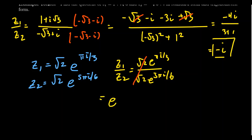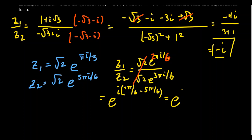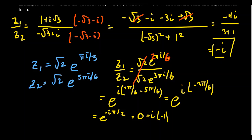Converting π/3 to sixths gives 2π/6, so 2π/6 − 5π/6 = −3π/6 = −π/2. The result is e^(−πi/2), which means we compute cos(−π/2) = 0 and sin(−π/2) = −1, giving 0 + (−1)i = −i. This confirms the same answer we got using the Cartesian method.